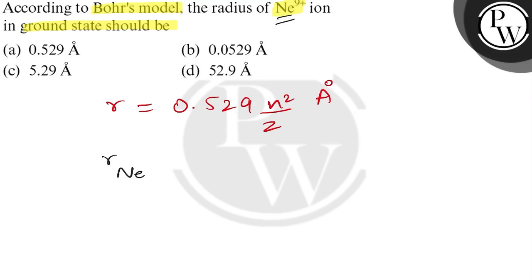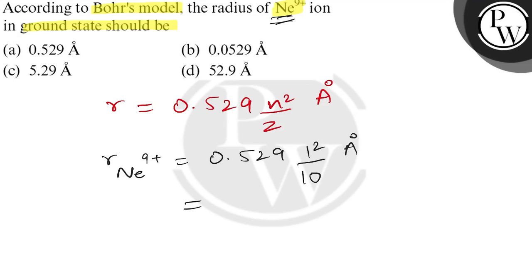So, r of Ne⁹⁺ is equal to 0.529. For the ground state, that means the first orbit, so n = 1. Therefore it is 1 squared upon the atomic number of neon, which is 10, angstrom. This comes out to be 0.0529 angstrom. So option B, 0.0529, is the correct answer.